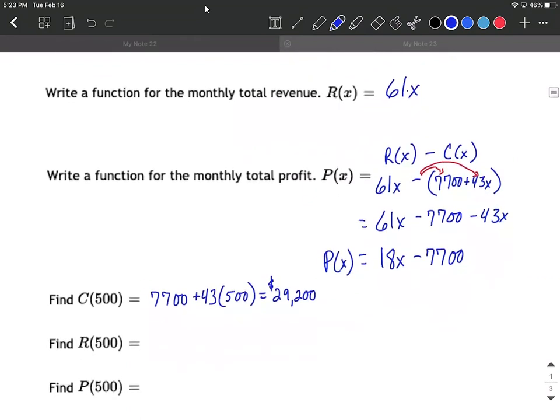Next, we want to calculate the revenue that we bring in for selling 500 outfits. So I'm going to use the revenue function up at the top. So it's going to be 61 multiplied by 500, which is 30,500. Again, in dollars.